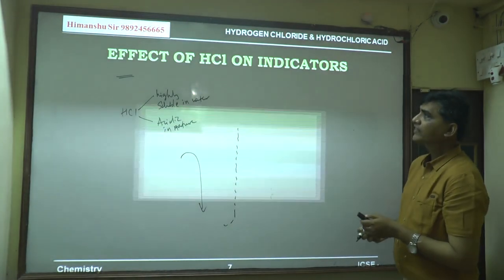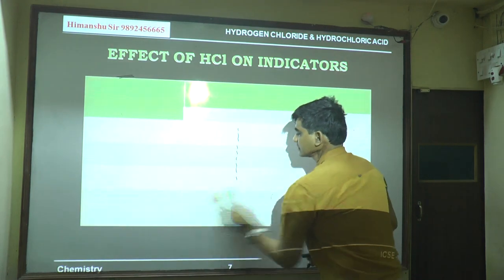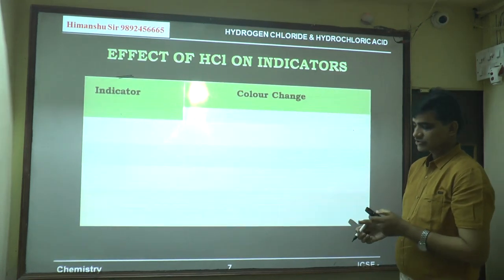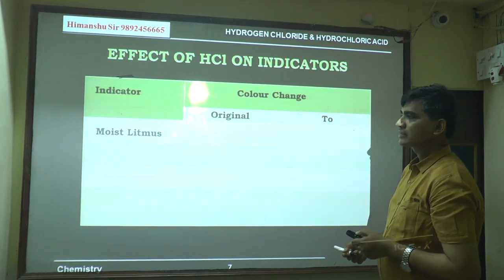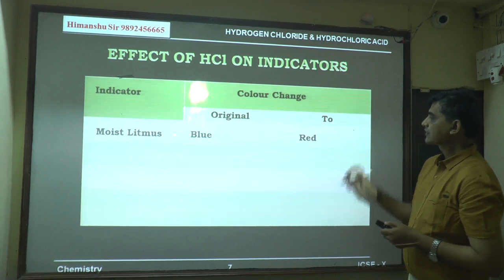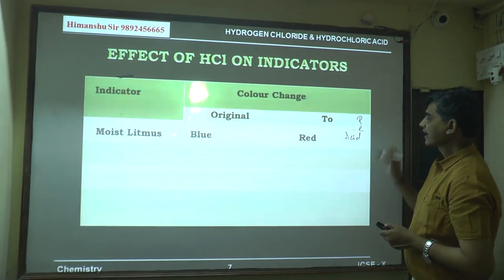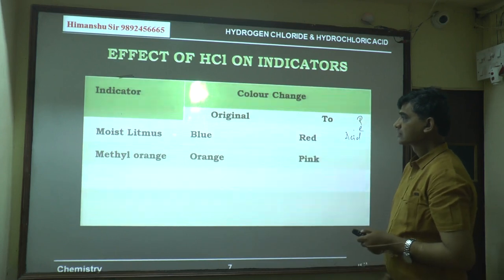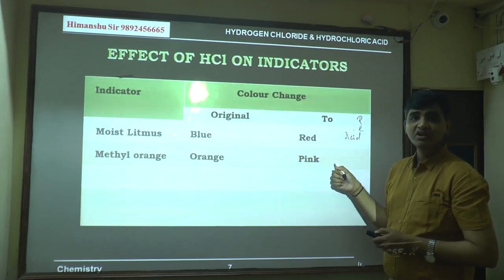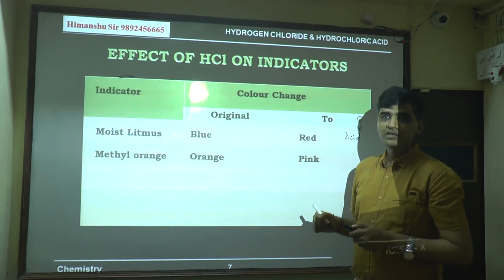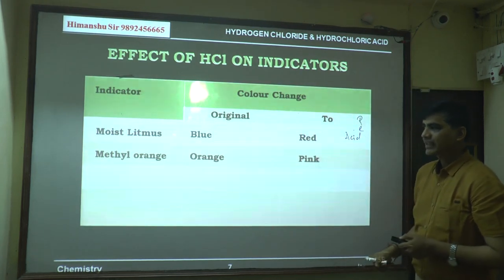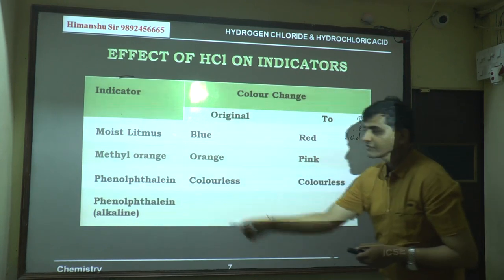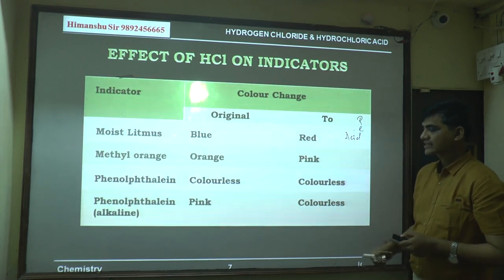Effect on different indicators: moist blue litmus paper turns red (acid turns litmus red). Methyl orange — original color orange, final color pink. Phenolphthalein — colorless in acid, remains colorless. Alkaline phenolphthalein — original color pink, turns colorless in acid. In 2008 a board exam question asked for the color of the indicator, so remember these color changes carefully.